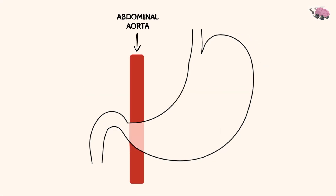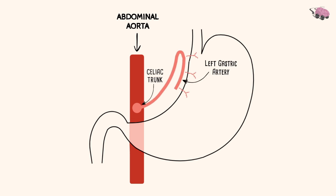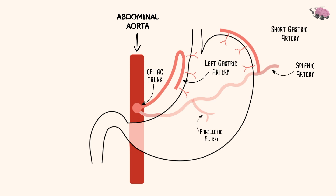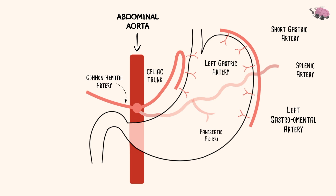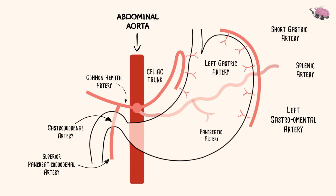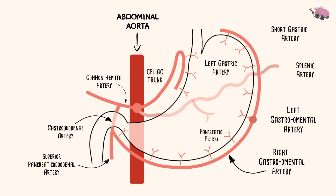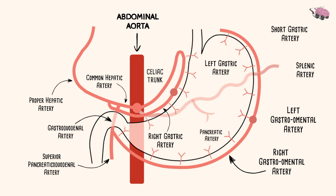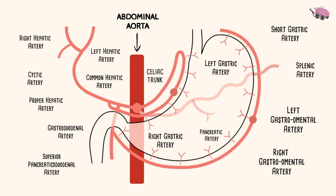The source: the abdominal aorta. The main focus: the celiac trunk from T12. The left gastric loops around the lesser curvature. The tortuous splenic artery to the spleen gives off the pancreatic artery, the short gastric, and below it the left gastro-omental artery. To the right, the common hepatic gives off the gastroduodenal artery going down and posterior to the duodenum, branching into the superior pancreaticoduodenal and the right gastro-omental. The common hepatic becomes the proper hepatic, giving off the right gastric, with the rest going to the liver as the right and left hepatic arteries. From the right hepatic, we have the cystic artery to the gallbladder.